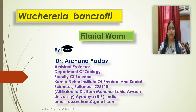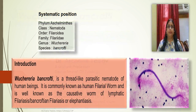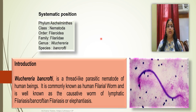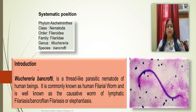Today I am going to teach you the new topic: Wuchereria bancrofti. The common name of Wuchereria bancrofti is filarial worm. Its classification: Phylum Aschelminthes, Class Nematoda, Order Filariida, Family Filariidae, Genus Wuchereria, Species bancrofti. Wuchereria bancrofti is a thread-like endoparasite and a nematode, also known as a roundworm.